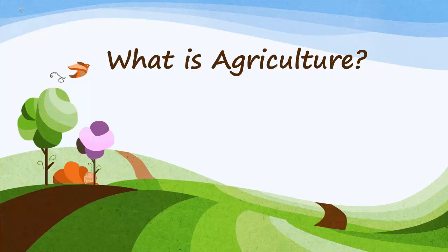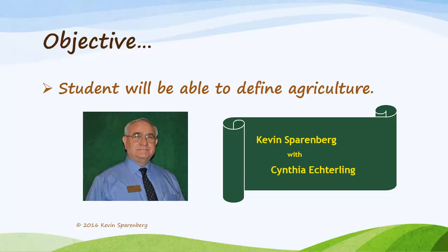What does the word agriculture make you think of? Do you think of a farm with a barn, a house, maybe some chickens and pigs, maybe a horse? Some people might think of fields of wheat or corn. In this lesson we will learn that agriculture includes many different activities and careers as we examine the definition of agriculture.